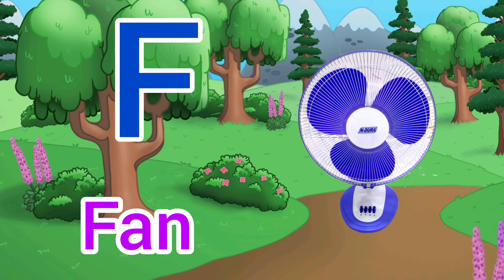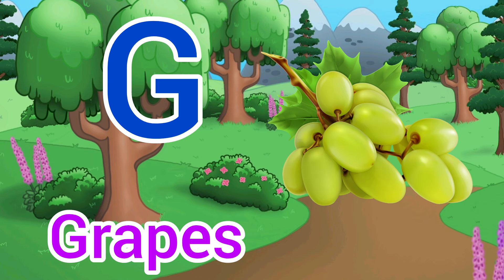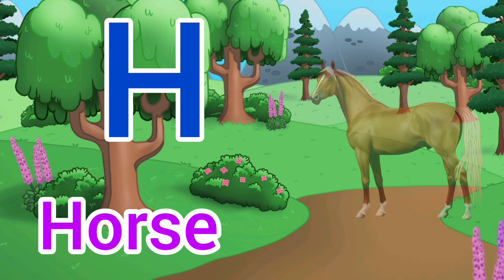G for grapes. Grapes means anggur. H for horse. Horse means ghoda.